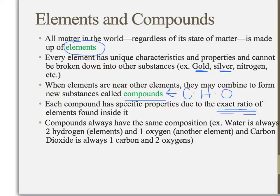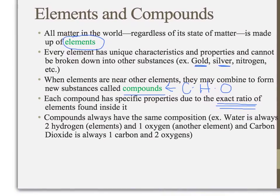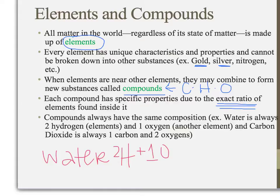Compounds are defined and set and always have the same ratio. Common compounds you have heard of include water — H2O — because there are two hydrogens and one oxygen in every compound of water, every single type. Carbon dioxide is another one: there is one carbon and two oxygens in every substance of carbon dioxide.